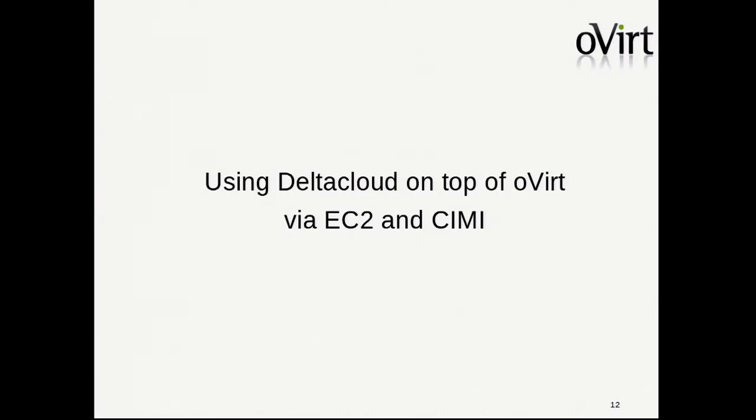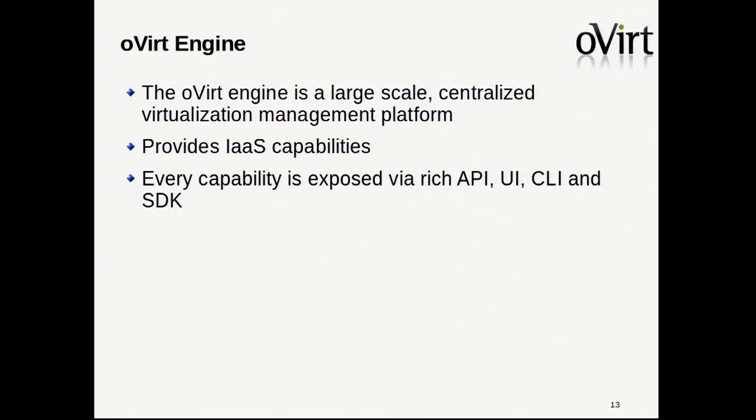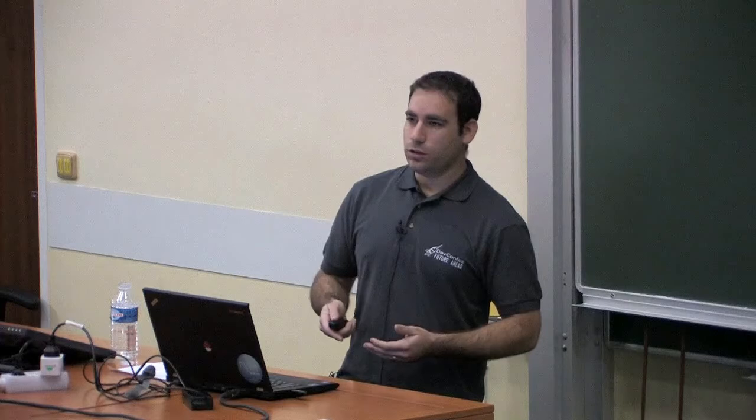I will focus on using Delta Cloud on top of oVirt and show examples using EC2 and CIMI. First, a short introduction to the engine. The oVirt engine is an open source virtualization management platform. It provides infrastructure-as-a-service capabilities, and all capabilities are exposed using a few frontends: rich admin and user portals, and a REST API for scripts and SDKs for development. The engine is responsible to do all the work — all requests are sent to the oVirt engine, where they are processed and executed.